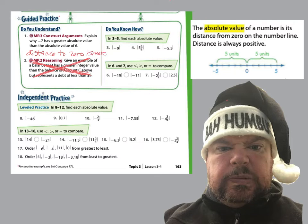The distance to zero is more. In problems three through five, we are going to find the absolute value. The absolute value of negative nine is nine. The absolute value of five and three-fourths is five and three-fourths. And the absolute value of negative five and five-tenths is five and five-tenths. Remember, absolute value is the distance to zero. In six and seven we're going to use a less than, greater than, or equal sign. We have negative nine, the absolute value of negative nineteen, and the absolute value of negative eleven. This equals 19, and this equals 11, because distance is always positive, so the absolute value of negative 19 is greater.